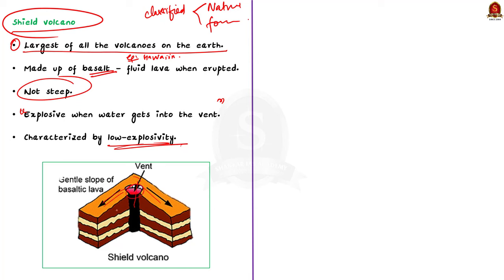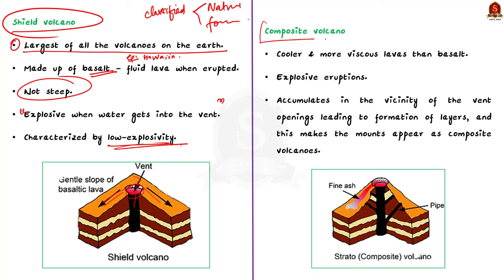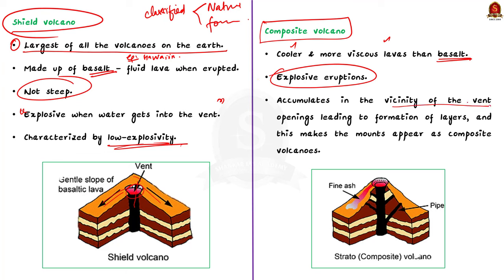The second type is composite volcanoes. These volcanoes are characterized by eruptions of cooler and more viscous lava than basalt. These volcanoes often result in explosive eruptions. Along with lava, large quantities of pyroclastic materials and ashes find their way to the ground. These materials accumulate in the vicinity of the vent openings, leading to the formation of layers, making the mounts appear as composite volcanoes.